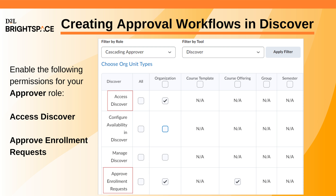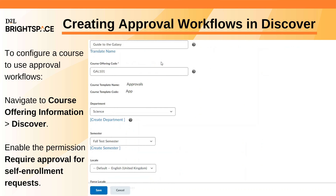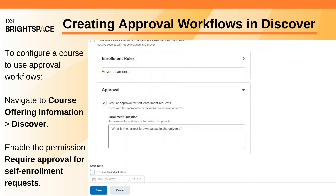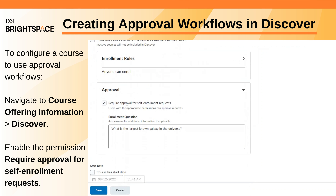Ensure that the following permissions are enabled at the org level: 'access discover' and 'approve enrollment requests.' To configure a course to use approval workflows, navigate to Courses, then Course Offering Information, and select Discover.